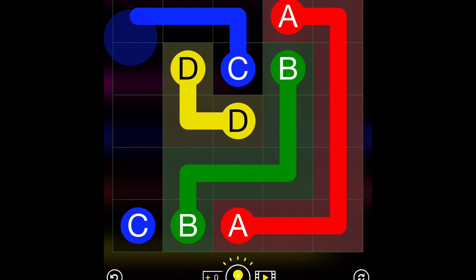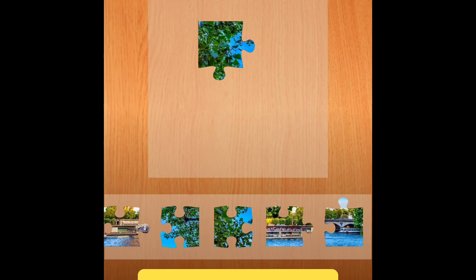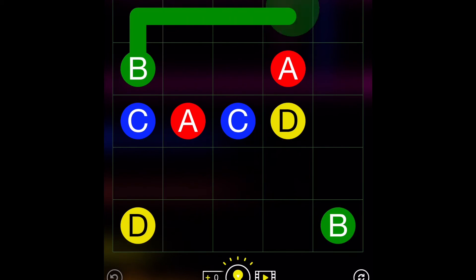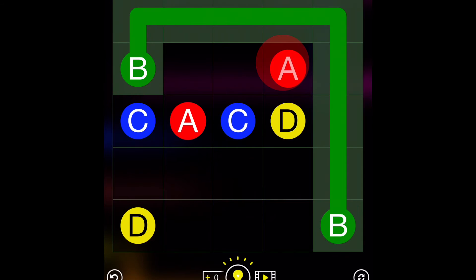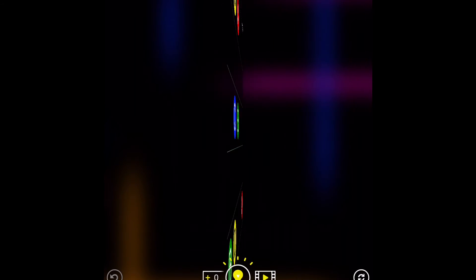B to B, C to C, yep, that's perfect. Yeah, I had a little bit of an advert there. That's B to B on the outside, A to A, C to C, and D to D. That was cool.